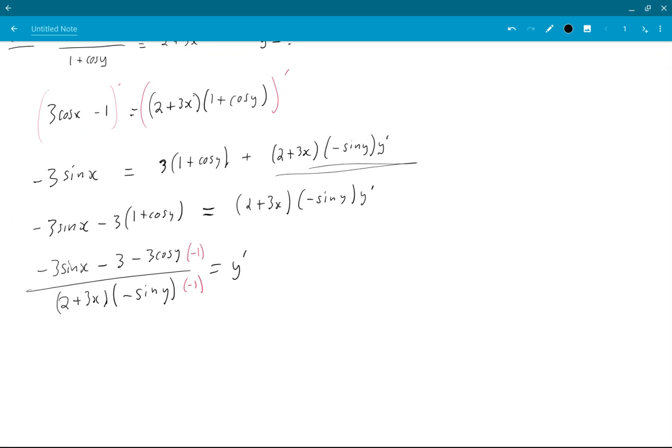And that'll give me 3 sin x plus 3 plus 3 cos y on top, all over 2 sin y plus 3x is y prime.